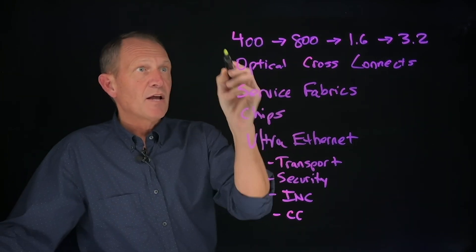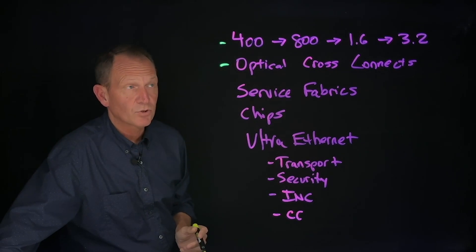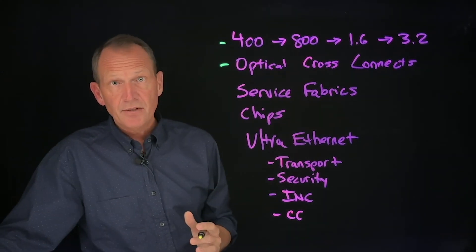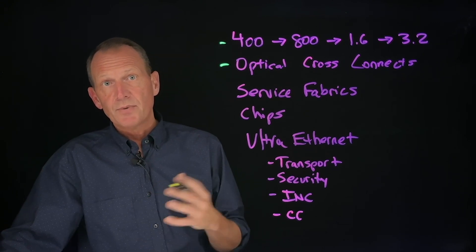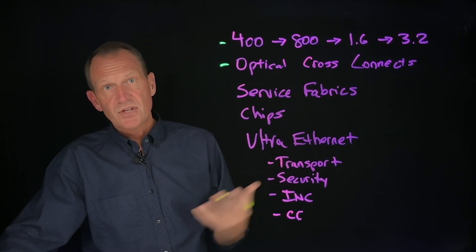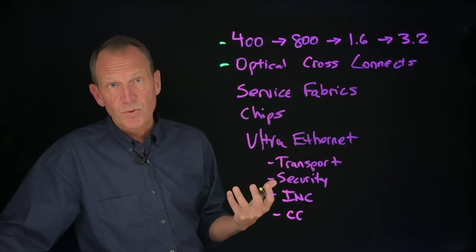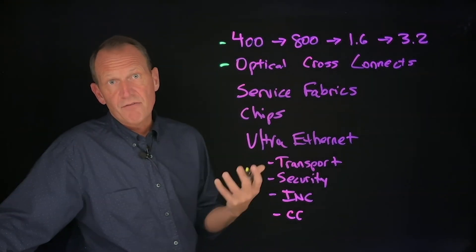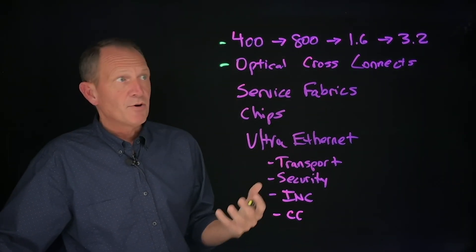The second area that a lot of folks are working on, Google has been very open with some of their work here, is optical cross-connect. What they've done is they have interconnected their GPU infrastructure directly with optical cross-connects. Instead of using an Ethernet or InfiniBand network, they've decided to connect with really an optical mesh between all these devices so that they can communicate directly at very high performance without the overhead associated with switches and routers.